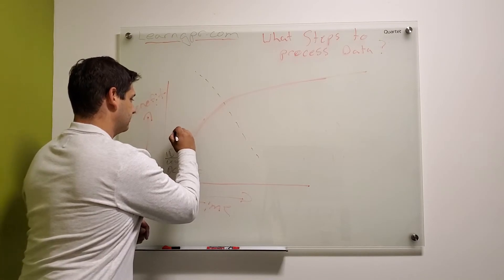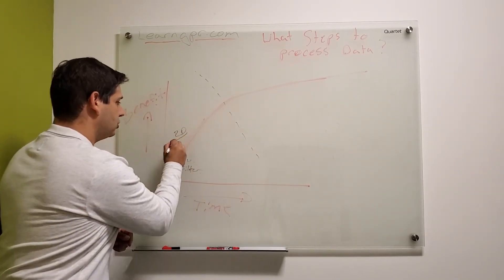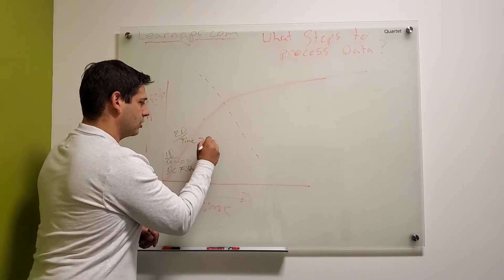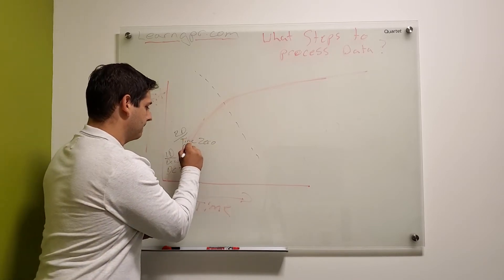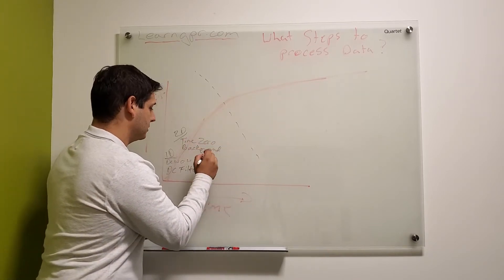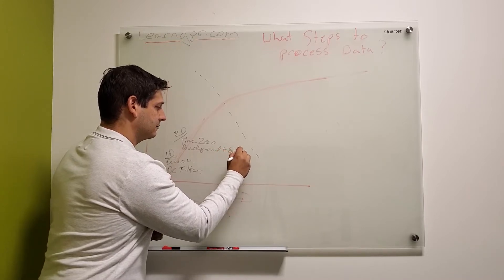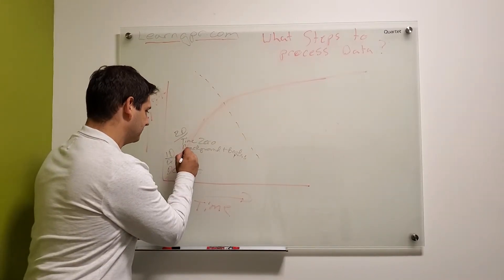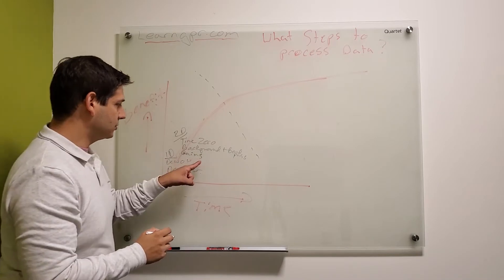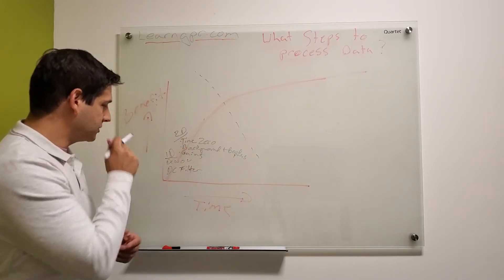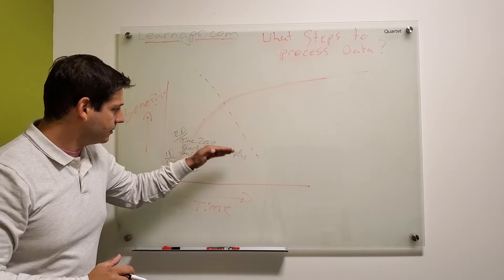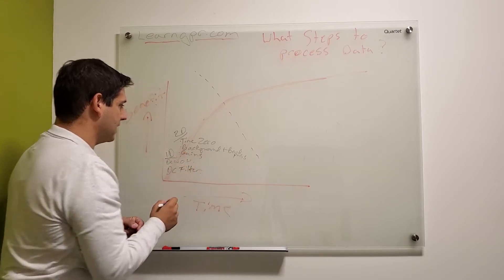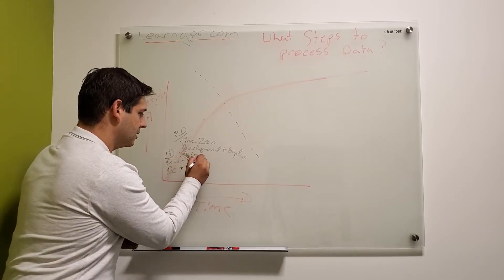Now 2D — this is where you get a lot of the benefit. Time zero corrections, background and bandpass filters, and gain functions. These are the key 2D processing steps that give you exponential benefit in a short amount of time.